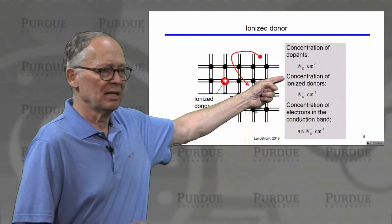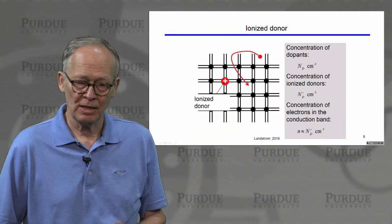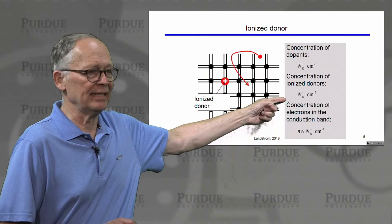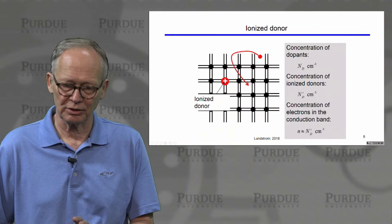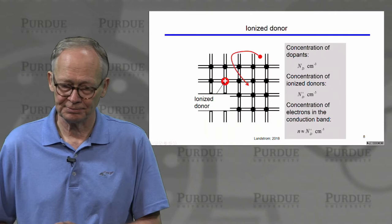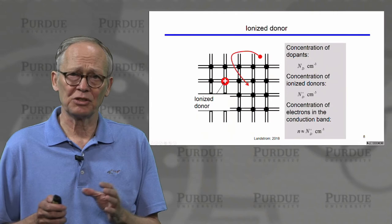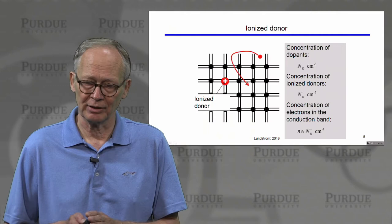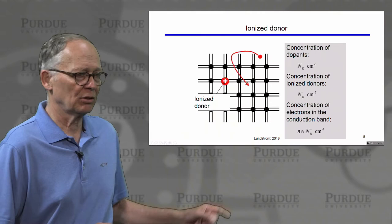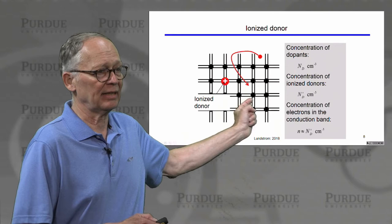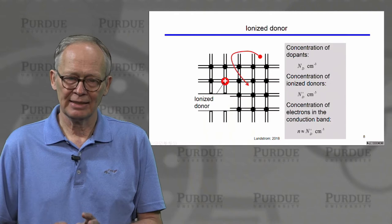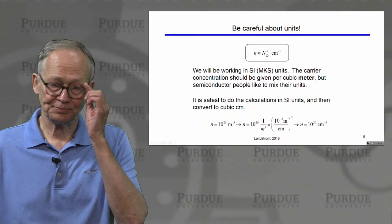After we've broken that bond, we needed that fifth electron to make the phosphorus atom neutral — equal numbers of electrons and positively charged protons so net charge was zero. Now that the electron is free to wander away through the silicon lattice, the phosphorus atom is ionized — it's left with a net positive charge. We call this an ionized donor. The concentration of ionized donors ND⁺ dominates, overwhelming the intrinsic carriers, so the concentration of electrons in the conduction band equals the concentration of ionized donors. That's the principle of doping.